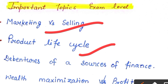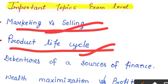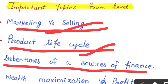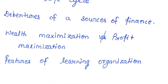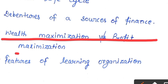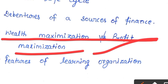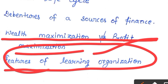Now for short answer topics: the first is Marketing vs Selling, which has been asked in your exam. Next is Product Life Cycle — we have to explain something about it. The third is Debenture as a Source of Finance, also asked in the last exam. Next is Wealth Management vs Profit Maximization, and the last topic is Features of Learning Organization. These are the most important topics — you will need to complete them because in the next exam you will need 2-3 of these topics.